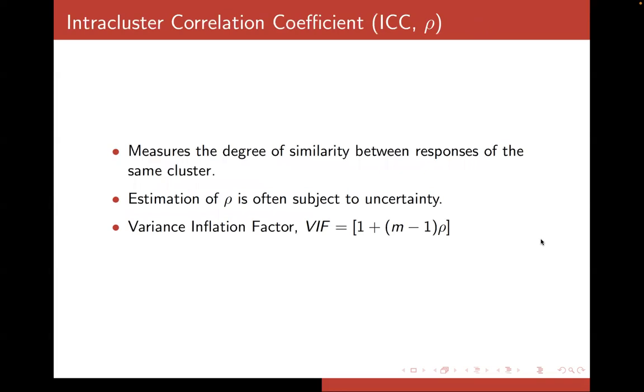Now, the primary parameter in a cluster randomized trial is what's called the intracluster correlation coefficient, or the ICC, which is denoted by ρ. Now, the ICC measures the degree of similarity between responses of the same cluster.